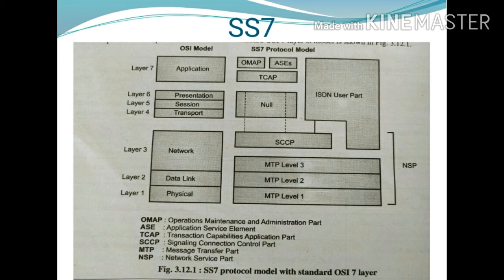Next is the Signaling Connection Control Part (SCCP). The function of the SCCP layer ensures that both networks are always connected with each other. It also carries enhanced addressing information beyond what MTP Level 3 provides, and supports global routing of information between different users.